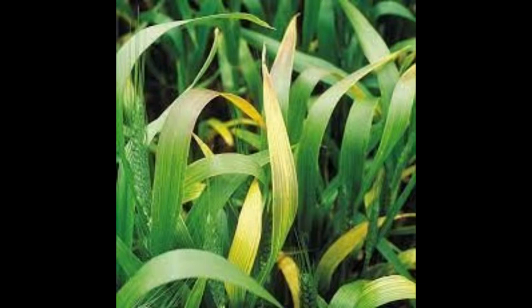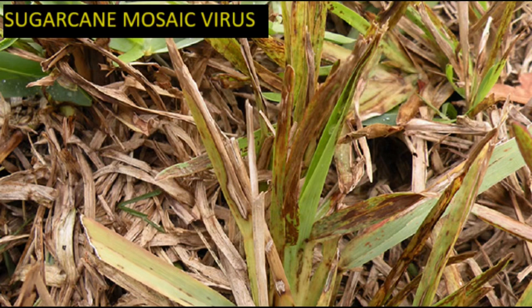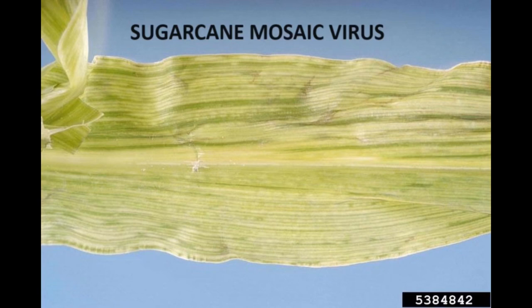Sugarcane Mosaic Virus is a potyvirus affecting sugarcane. Symptoms include mosaic patterns, yellow streaks, and mottling on leaves. Severe infections can impact sugarcane yield and sucrose content.